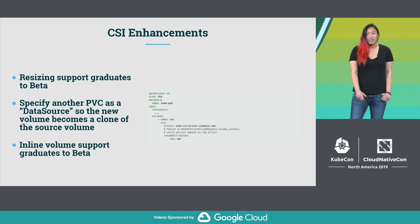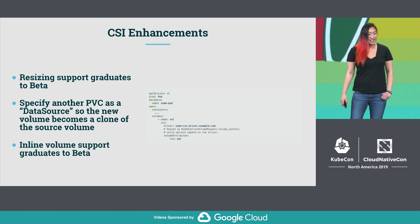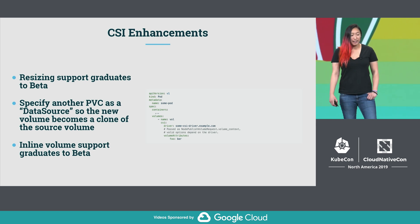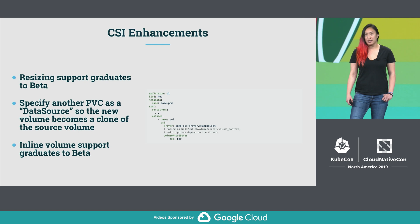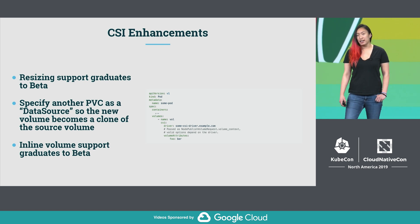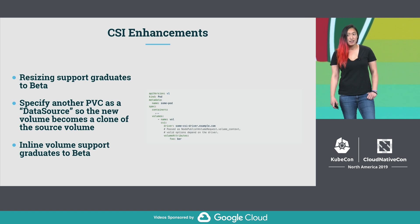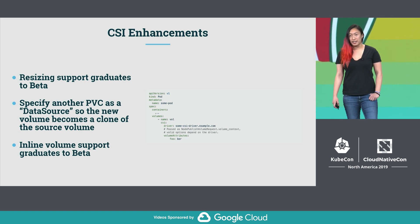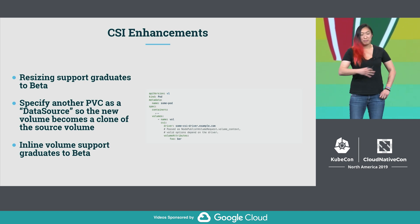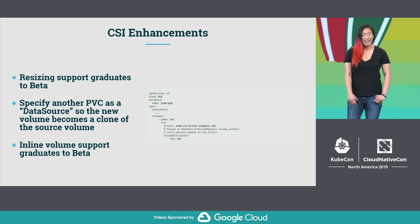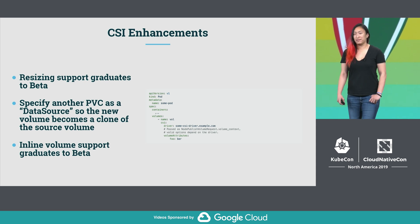You can also create a new volume that is a clone of another volume. And you can also do inline volume support, which is moving to Beta — super convenient if you want an ephemeral volume that is attached to your pod and only exists for the duration of the pod's lifetime. The screenshot here might be a little small for those in the back — it's an example of how you might do this in YAML, which is everyone's favorite.